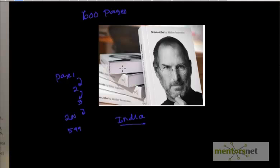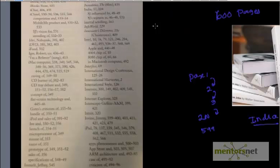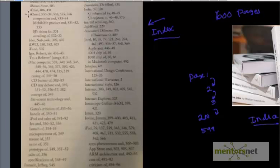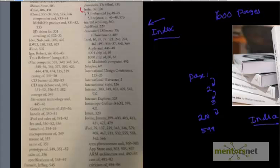This problem has been solved by the author because he wrote something called an index. This is what the index page looks like — he put keywords in alphabetical order. So if I want to find out about India, I go directly to the index pages at the very back, scan in alphabetical order, go to 'I', and find something about India.